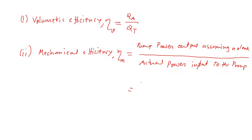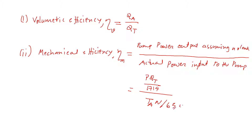If there is no leakage, the actual and theoretical flow rates are basically the same. So we can write the power equation as P times Q-theoretical — because without leakage it provides the theoretical flow — divided by the actual power input, which is torque input times N divided by 6300.